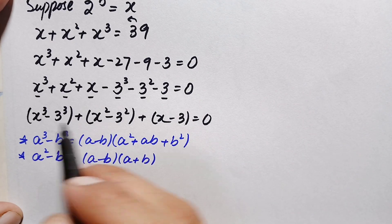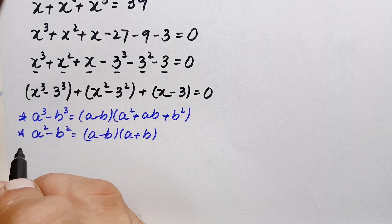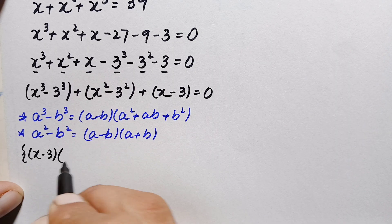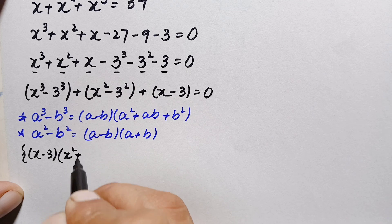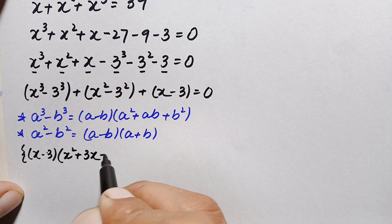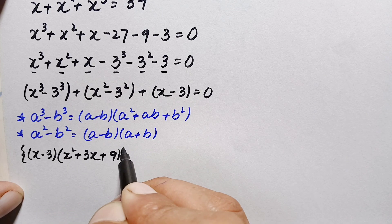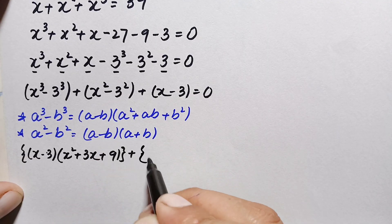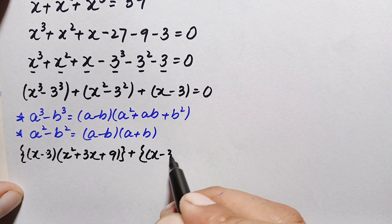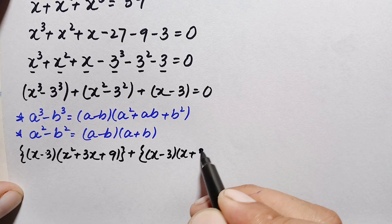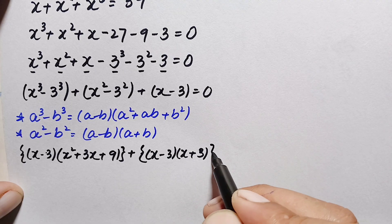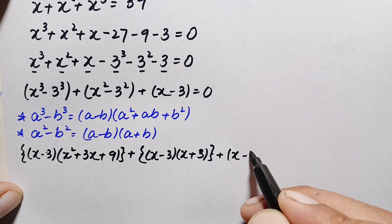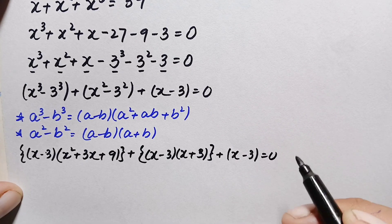Applying these identities, the left hand side becomes: (x minus 3)(x squared plus 3x plus 9) plus (x minus 3)(x plus 3) plus (x minus 3) equals 0.